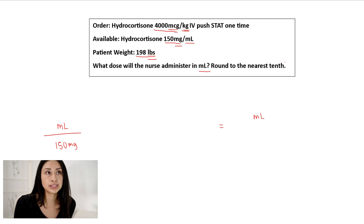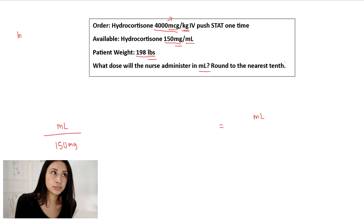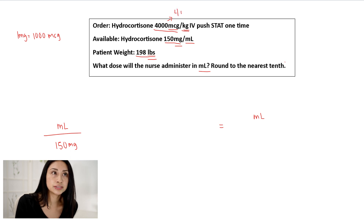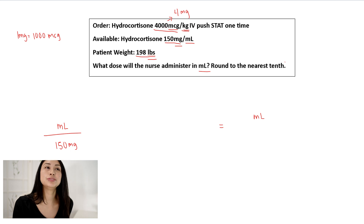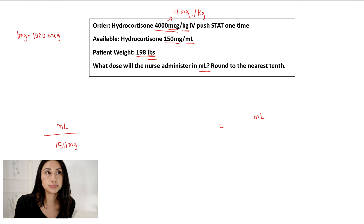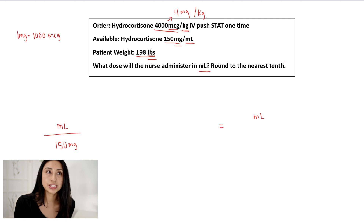Before I plug in these micrograms into the equation, I am going to convert them to milligrams. I know that one milligram is the same as 1,000 micrograms. So to go from 4,000 micrograms to milligrams, I am going to divide by 1,000, which gives me four. So 4,000 micrograms is the same as four milligrams. And let's not forget the other unit — per kilogram. These two mean the exact same thing, just in a different unit format. So now I can use four milligrams per kilogram in my equation.